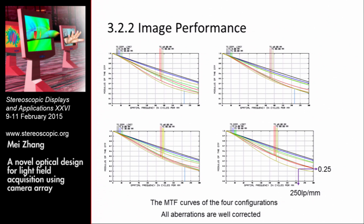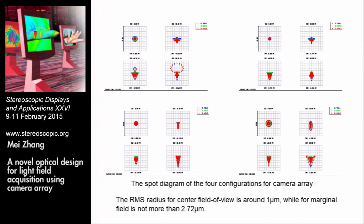Here is the MTF to evaluate the image performance. The cutoff frequency values of the MTF curves are all about 0.25, so all aberrations are well corrected. The spot diagram shows that for the center field of view, the RMS radius is all around 1 micrometer, and for the marginal field, it is not more than 2.72 micrometers.